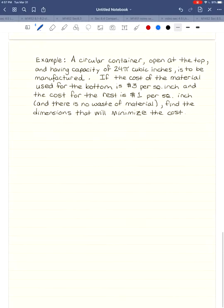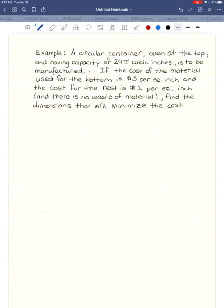So minimum distance of square root of 45 squared plus 30 squared occurs in two hours. Okay, so we use the Pythagorean theorem here. Let's see what the next one is.